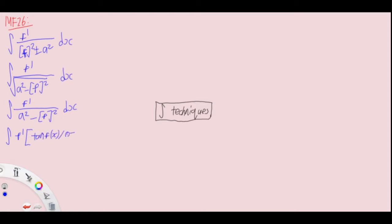The fourth one combines all three. You have f' times tangent fx, cotangent fx, cosecant fx, or secant fx. All four formulas are found in MF26.